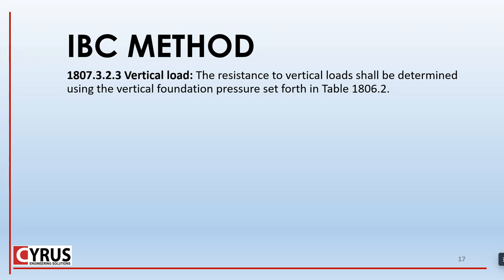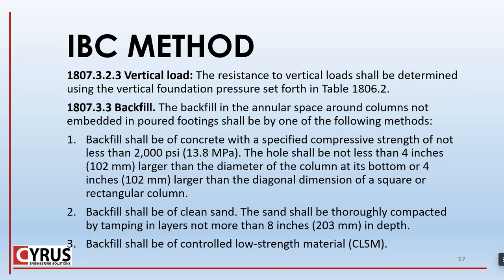So far we've discussed lateral capacity. For vertical load, the resistance shall be determined using the vertical foundation pressure set forth in Table 1806.2. In cases where the footing diameter is not as large as the drilled hole, we need to backfill the drilled hole — either with lean concrete or clean sand. If using lean concrete, the hole shall be not less than four inches larger than the diameter of the column at its bottom, or four inches larger than the diagonal dimension of a square or rectangular column.